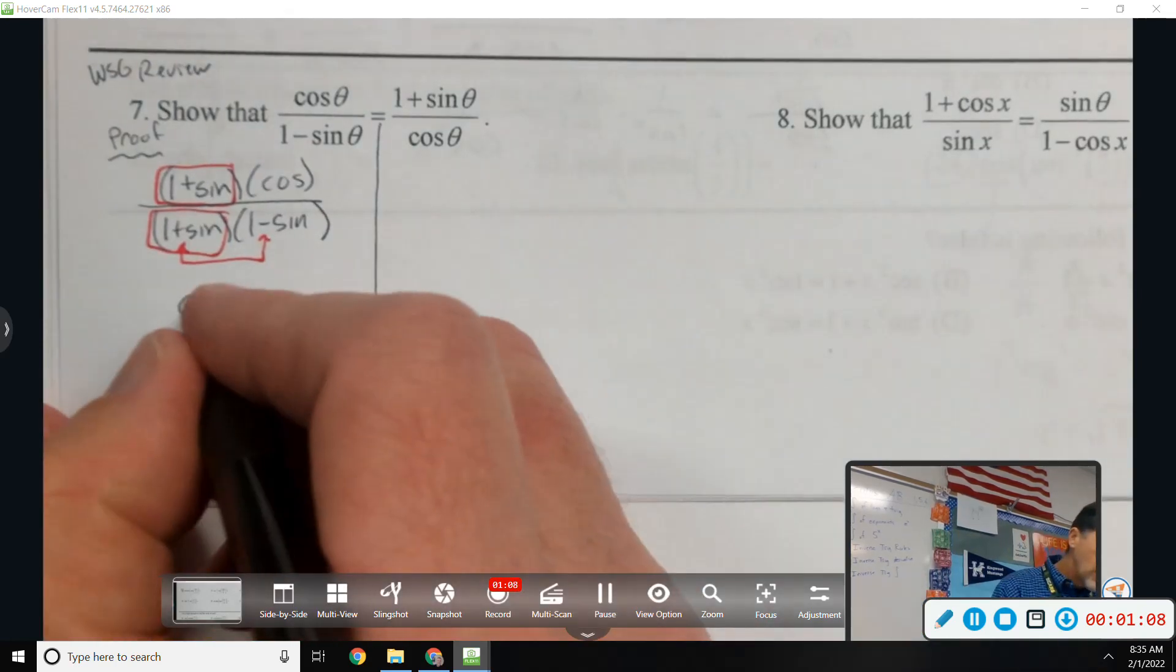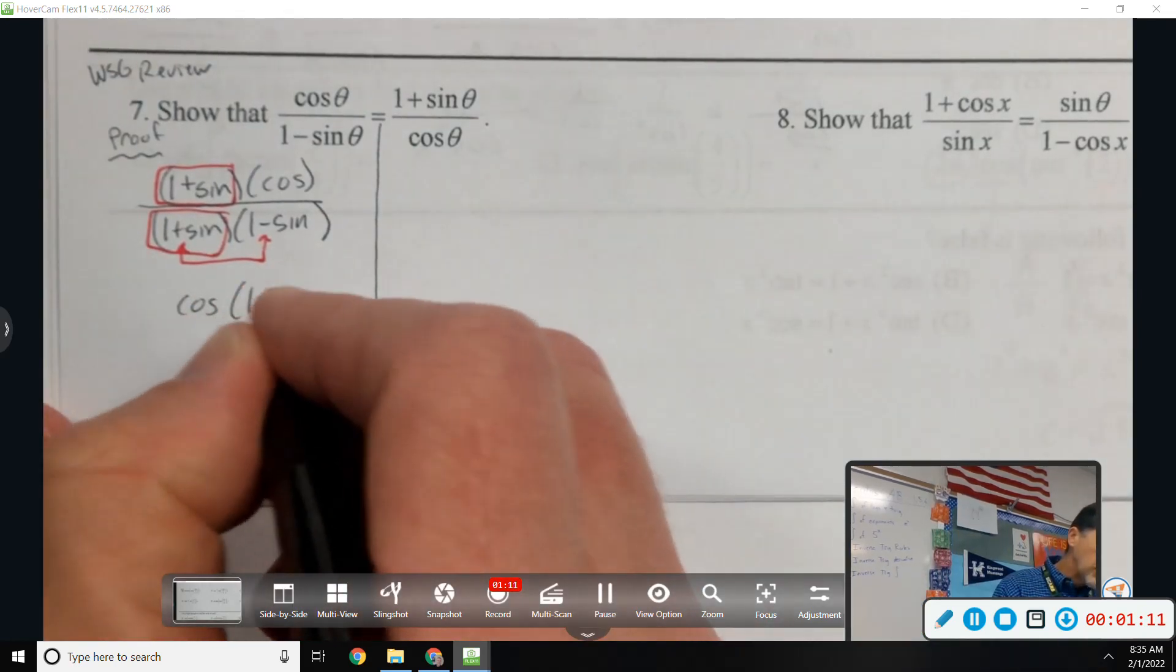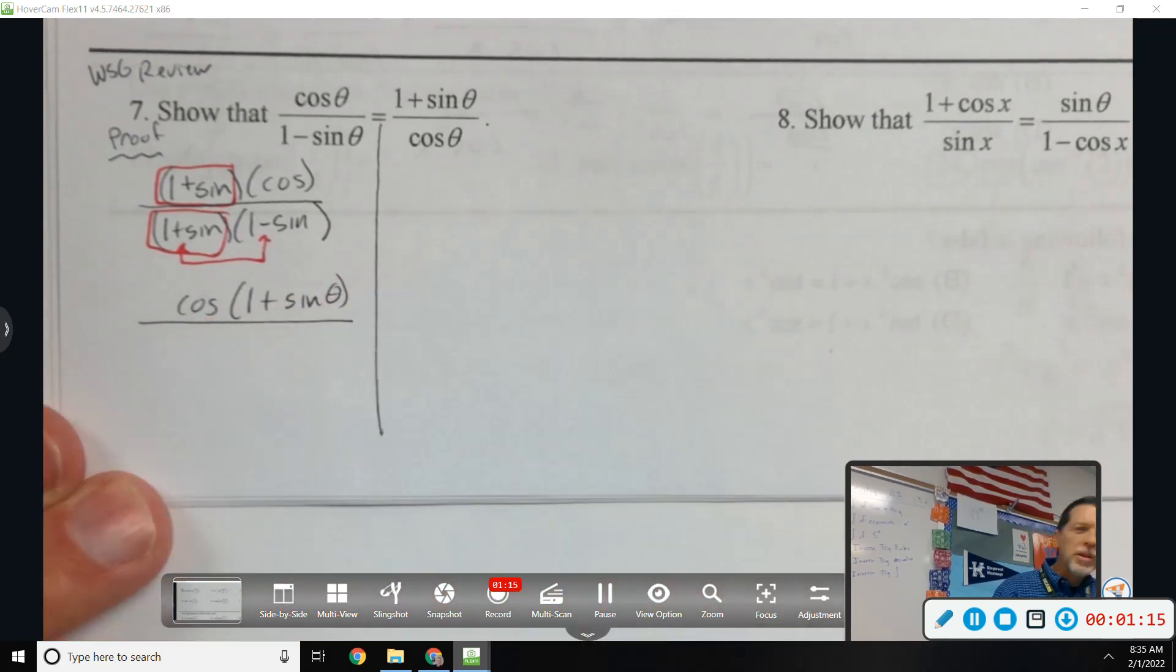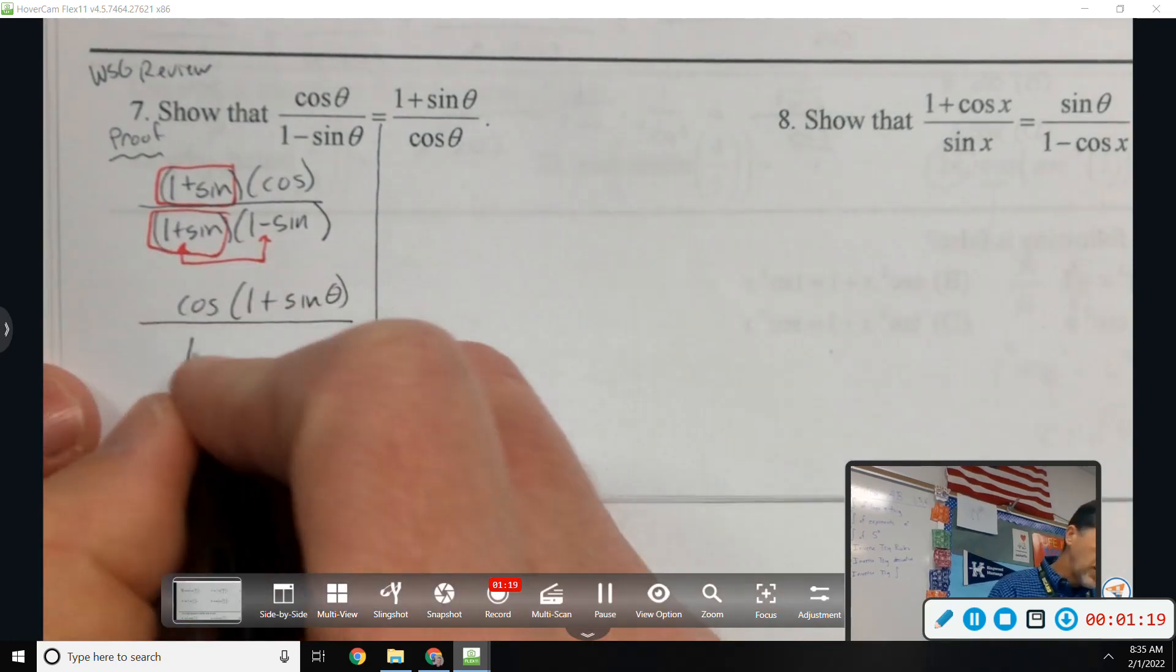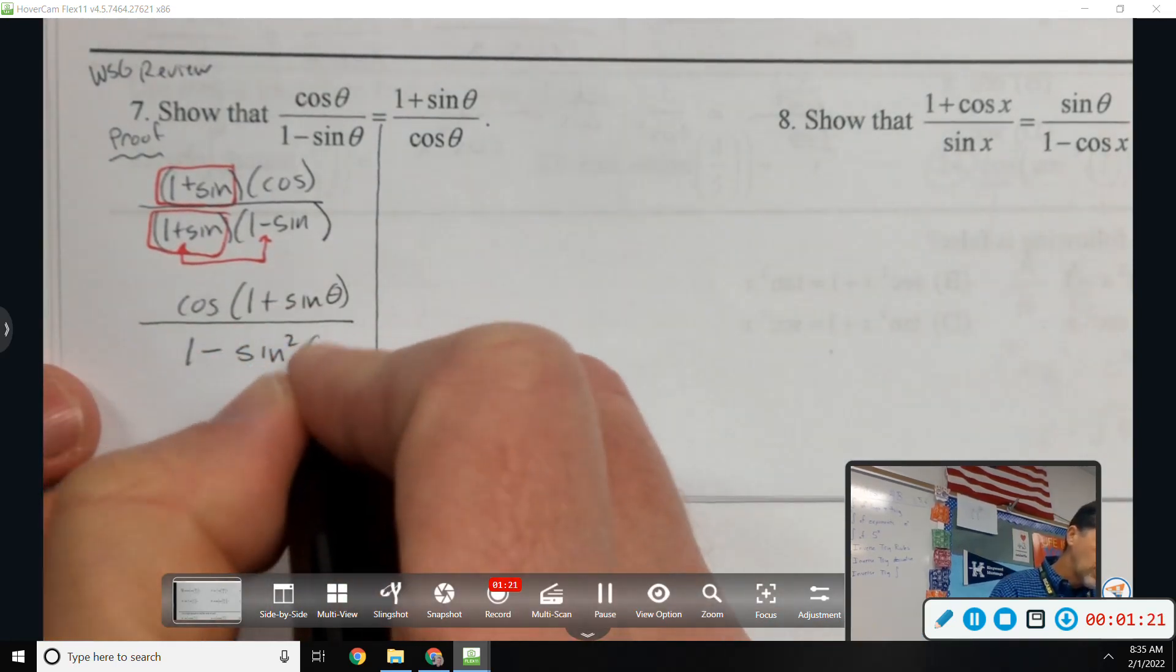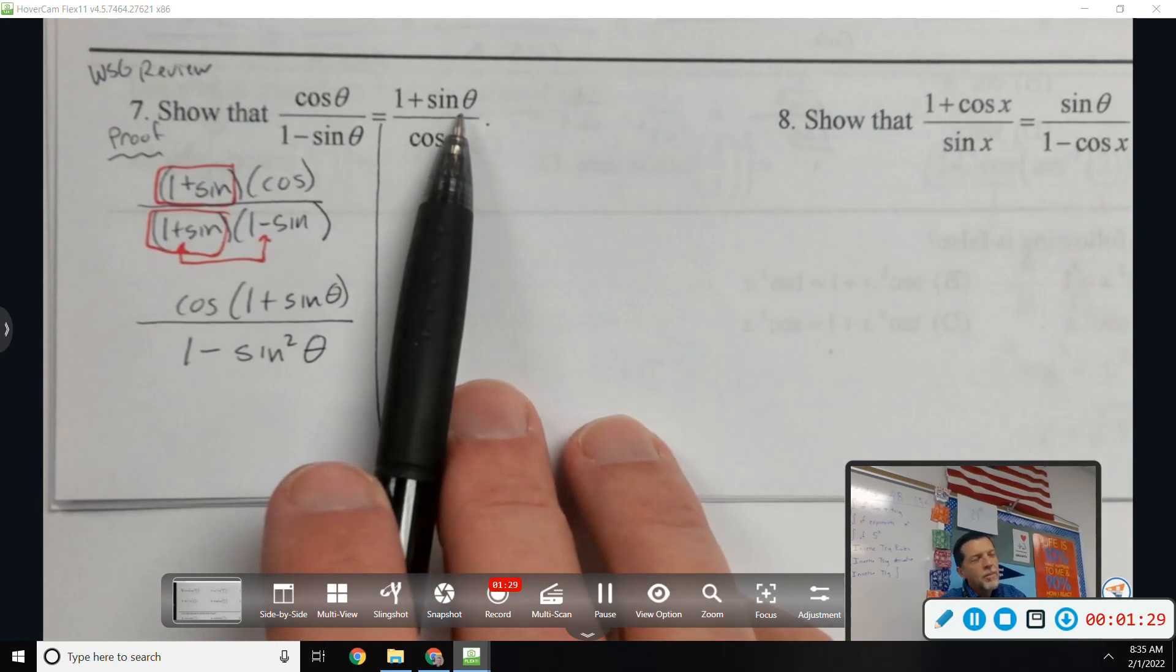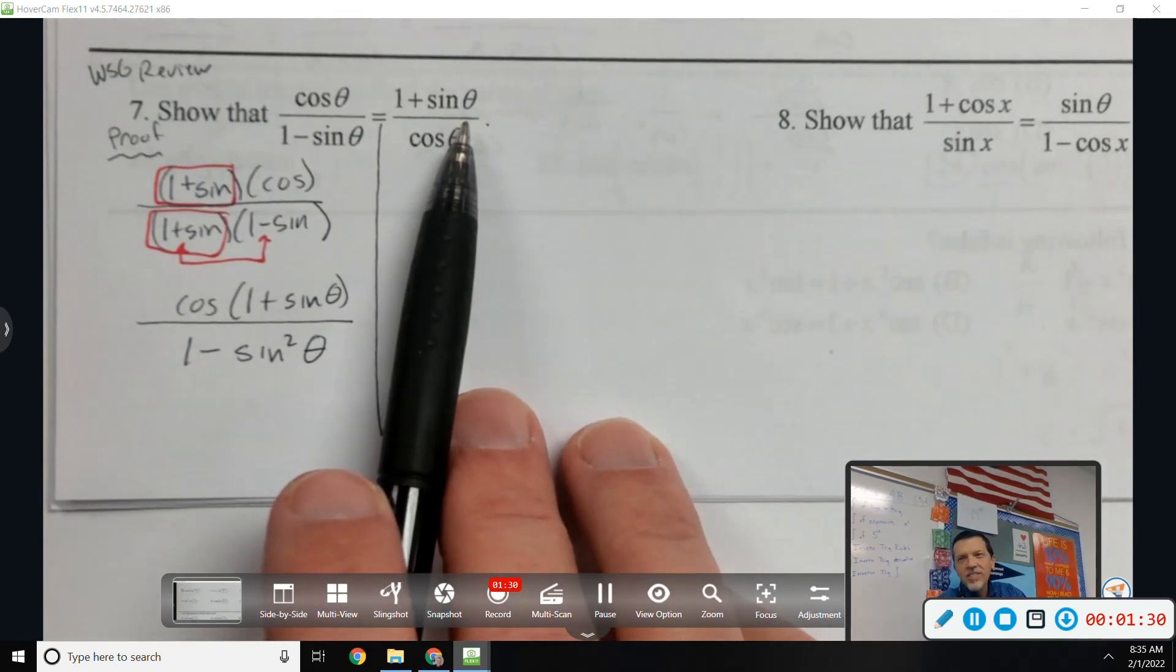In the numerator, I'm probably just going to leave it. But in the denominator, one plus sin times one minus sin is one minus sin squared. Remember, I'm always looking at my answer as well. That's not cheating. That's the goal, is to get there.